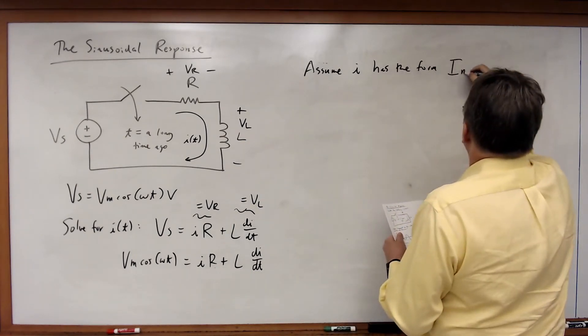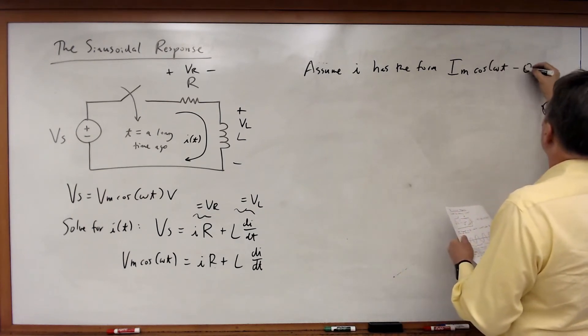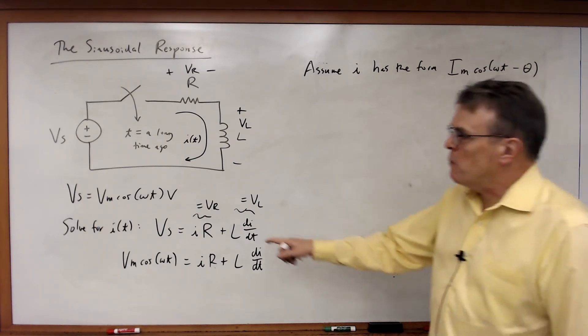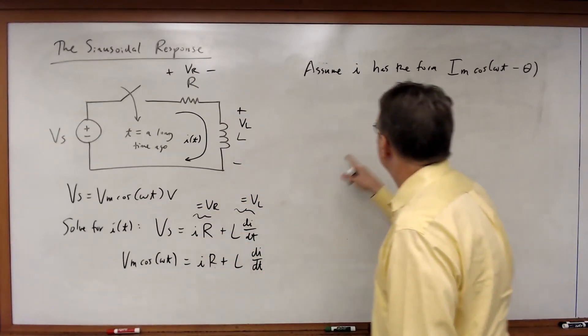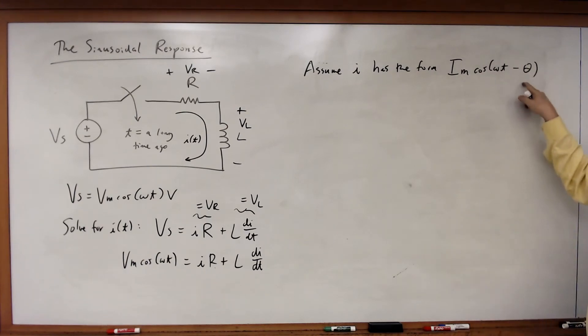It's going to have the form I of M cosine omega T minus theta. Let's just assume the current has that form. It turns out that's a good assumption, because in a linear circuit we are going to expect to see the same cosine omega T. Except we're going to have a different phase angle, we're going to have a different magnitude.